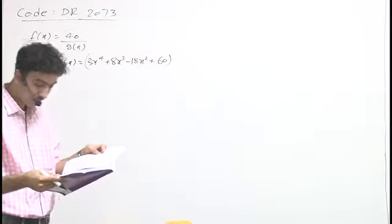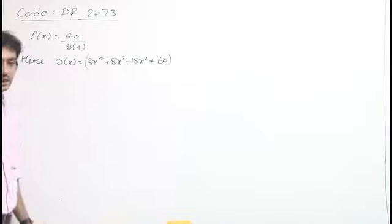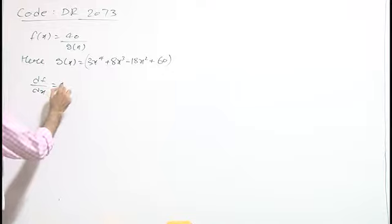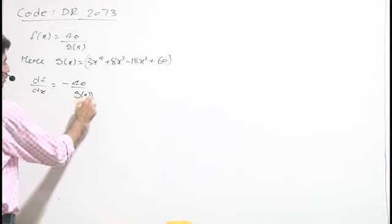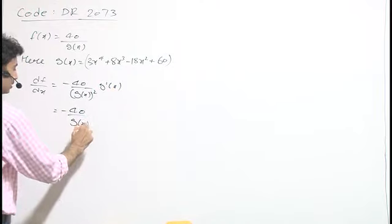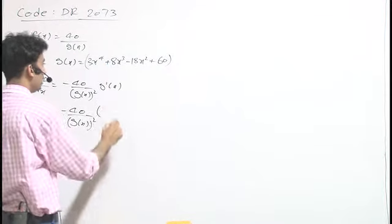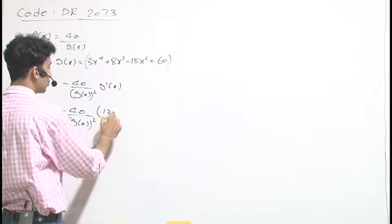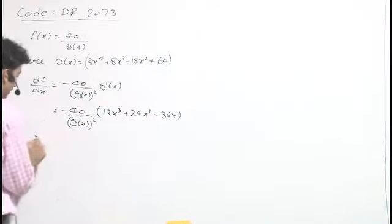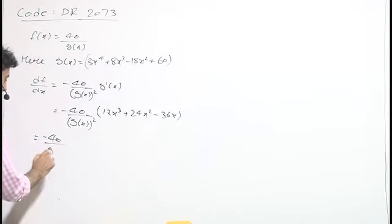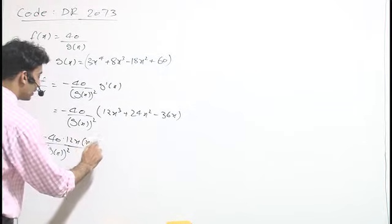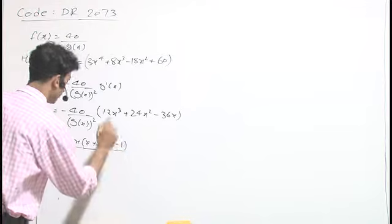In order to find the extreme values of f(x), we find df/dx. This is defined as -40/[g(x)]² multiplied by g'(x). The derivative g'(x) comes out to be 12x³ + 24x² - 36x, which factors as -40/[g(x)]² times 12x(x+3)(x-1).